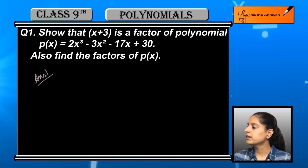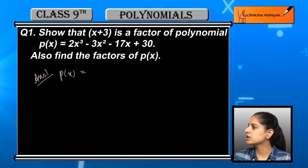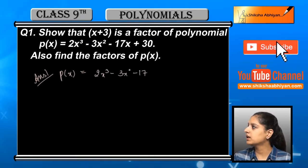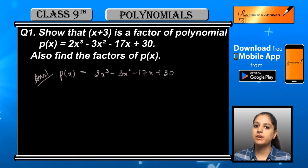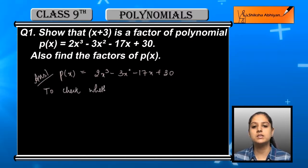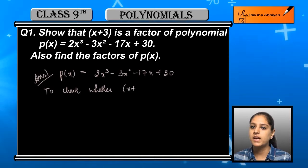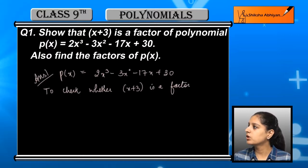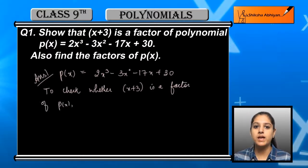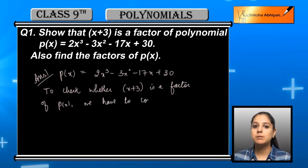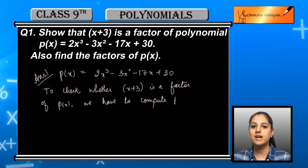सबसे पहले जो polynomial हमें given है, it is p(x) = 2x³ minus 3x² minus 17x plus 30. हमें ये check करना है — first part of the question — कि x plus 3 उसका एक factor है या नहीं। आपको पता है कि कोई भी linear polynomial का factor check करने के लिए, for example x plus 3, we set x plus 3 = 0, which means x = minus 3.